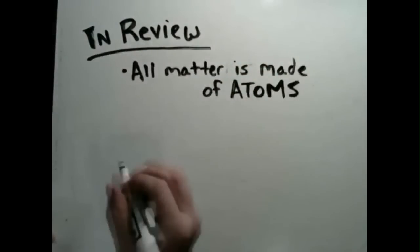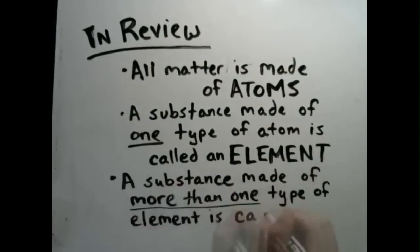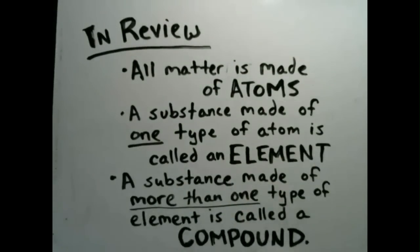In review, all matter is made of atoms. A substance made of one type of atom is called an element. A substance made of more than one type of element is called a compound.